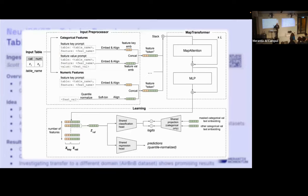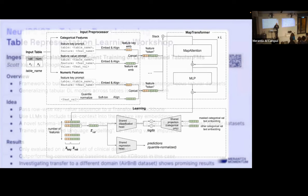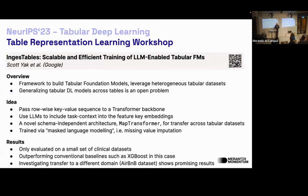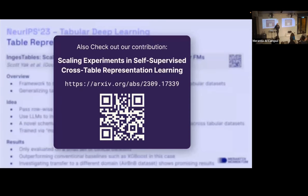They use an LLM to encode the semantic knowledge from each table's metadata and concatenate it with value embeddings from their regular encoders. They introduce a MAP transformer with a different attention mechanism for key tokens versus value tokens. The evaluation is a bit small — only three datasets and no real cross-table representation learning — but it's conceptually quite nice. Their team also presented a related paper at the same workshop on learning tabular representations across tables.